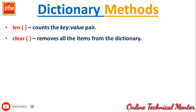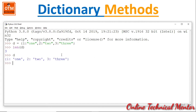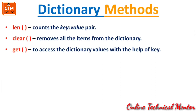Next, clear() removes all items from the dictionary — it deletes all the content. Here a dictionary is already declared. If I print D it shows the dictionary. Now if I write D.clear() and again print D, there is no content within the dictionary. The clear function deletes all the pairs from the dictionary.